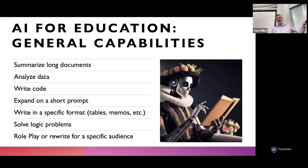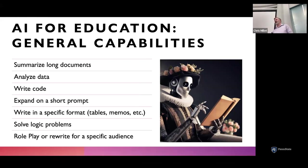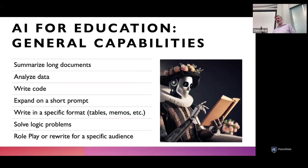Another capability is role-playing or rewriting to a specific audience. You can say 'take my essay and rewrite it in Shakespearean English,' but you can also say 'I am a budding scientist and I don't know how to communicate like scientists — take this paper I wrote and rewrite it in more formal scientific language.' That's really cool because you're expected to communicate effectively in a professional context, and this is one way to learn those disciplinary norms.